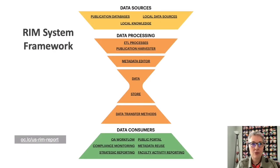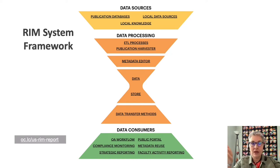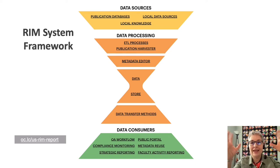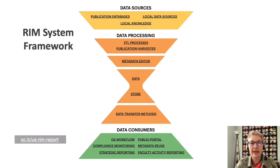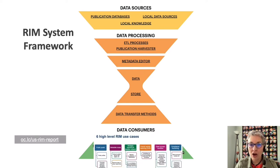Another finding of our report was this RIM system framework, which describes how data can come into the system from publication databases as well as local sources through a publication harvester or data entry into a core data store, which then, through data transfer methods such as APIs, can be used by a number of data consumers — essentially the six high-level RIM use cases described in the report.